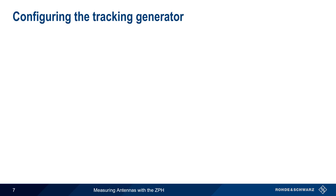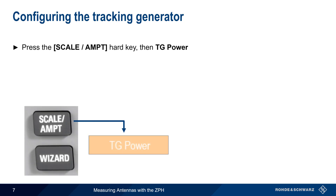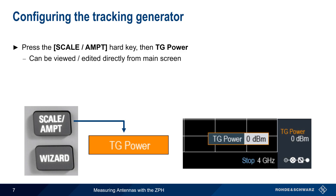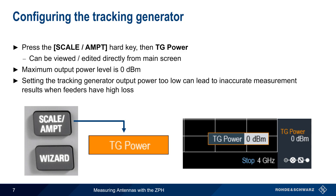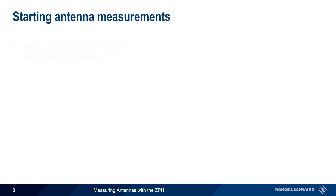The tracking generator or signal source is configured by pressing the Scale Amplitude hard key and then selecting TG Power from the menu. Note that the tracking generator power can also be viewed and edited directly from the main ZPH screen. The maximum configurable output power is 0 dBm. Care should be taken not to set the tracking generator output power too low, since this can lead to inaccurate measurement results when the feeders have high loss.